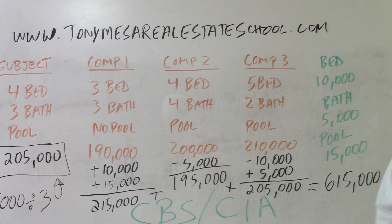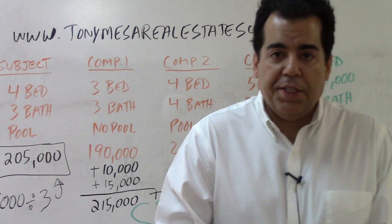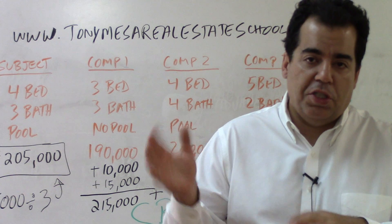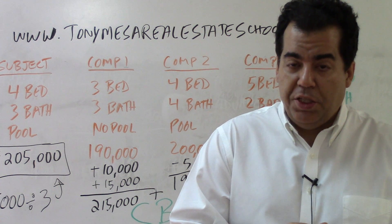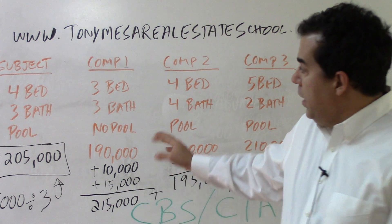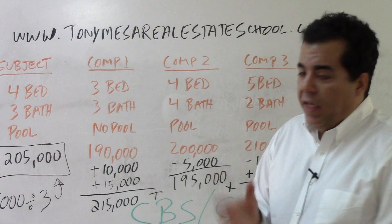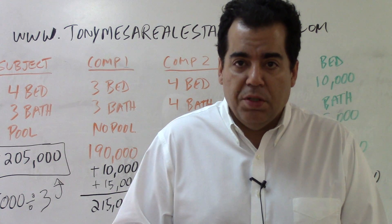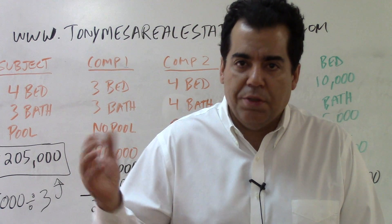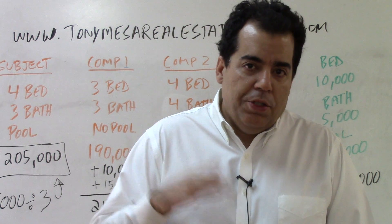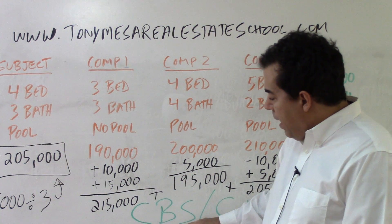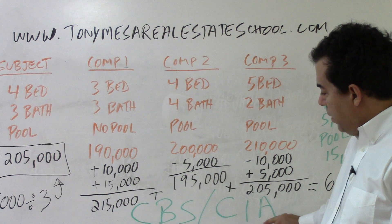In summary, the sales comparison approach uses past sales that are substantially similar to the subject, sold fairly recently in the same geographic area, to get an estimate of value. On the state exam, they will give you numbers that may seem unusual — just use whatever numbers they give you. CBS and CIA are good memory aids: if the comp is better, subtract from the comp; if the comp is inferior, add to the comp.